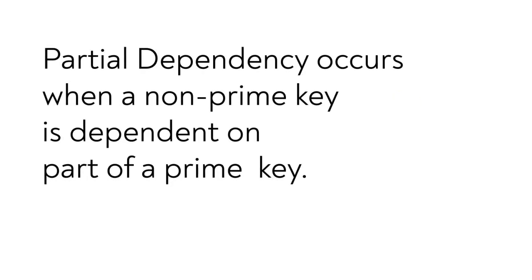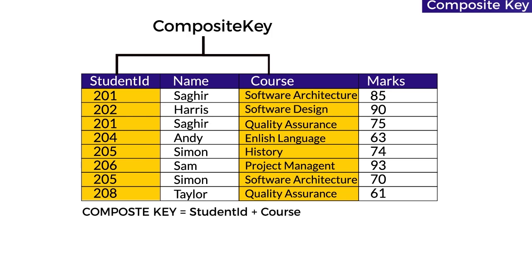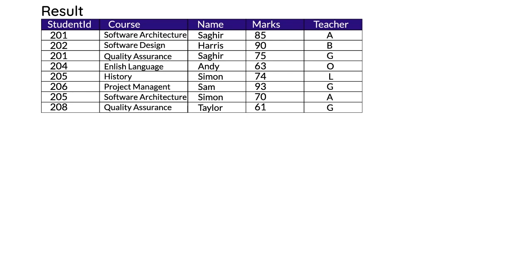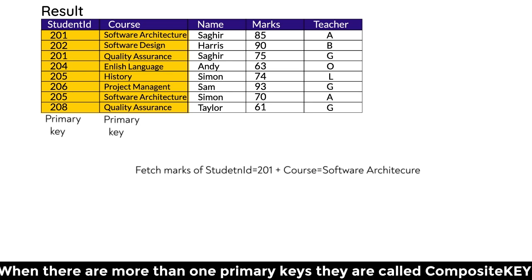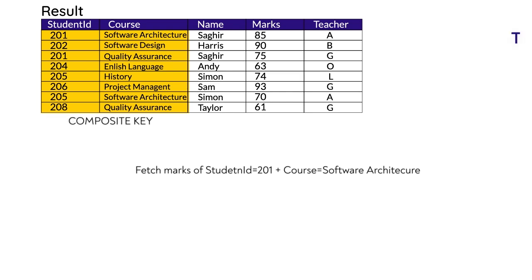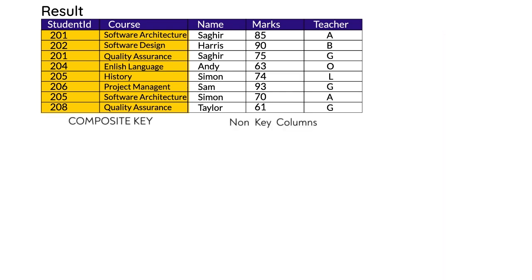Partial dependency only happens in the case of a composite key. A composite key is one in which there are more than one primary columns for the table — like in this case, student ID and course are the primary columns, and together they are called a composite key. Partial dependency is when a non-key column is not totally dependent on each of the primary columns. In this case, the teacher column is only dependent on course — it has nothing to do with the student ID — so it is partially dependent on the primary key. The partially dependent part can be taken away to make another table, and they are linked at the end.